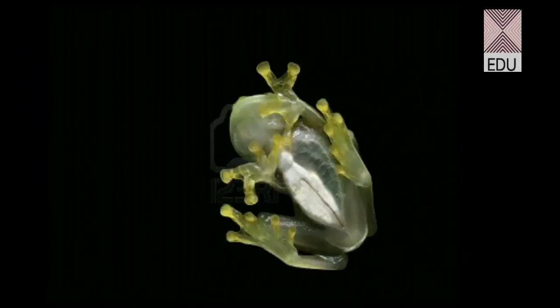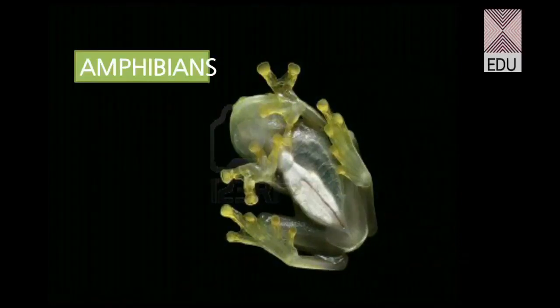Good day students. In this part of the lecture, in continuation with the evolution of the heart, we are going to discuss the heart in the case of amphibians. Previously we discussed hearts in fishes, where fishes have a two-chambered heart — a single auricle and a single ventricle — with two accessory chambers: the sinus venosus and the conus arteriosus.